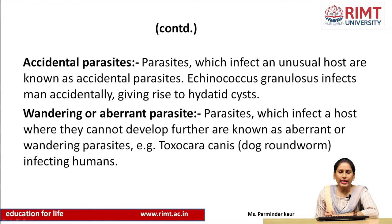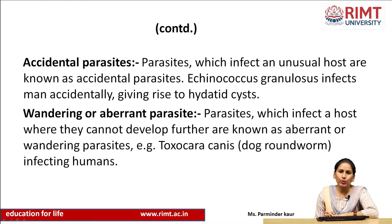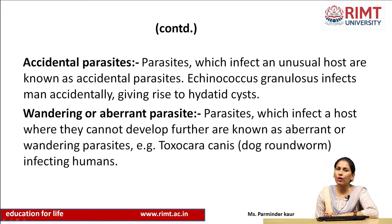We also have accidental parasites — parasites which infect an unusual host. Normally that parasite does not affect that host, but in this case they are infecting an unusual host. Echinococcus granulosus infects man accidentally and gives rise to hydatid cysts. This infection generally presents in dogs, but here it is present in human beings — the unusual host. Wandering or aberrant parasites are those which infect a host where they cannot develop further. Example: Toxocara canis, the dog roundworm which infects human beings.